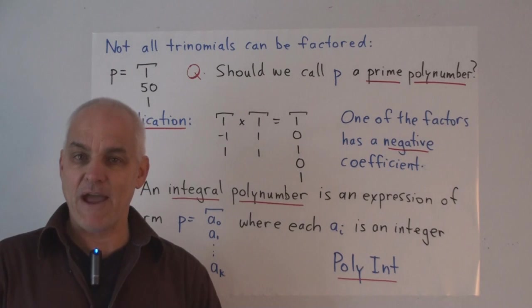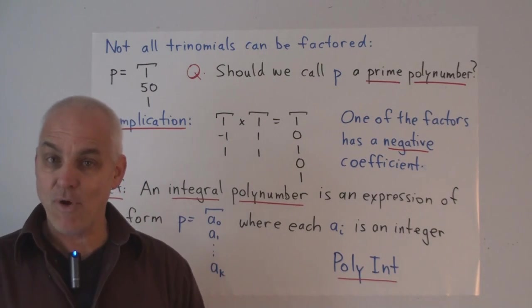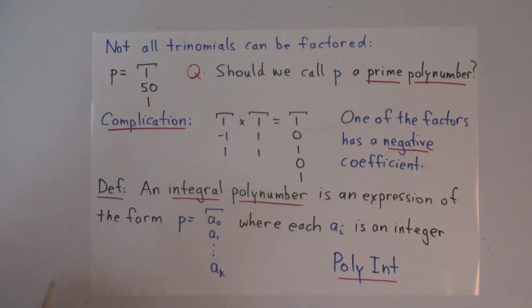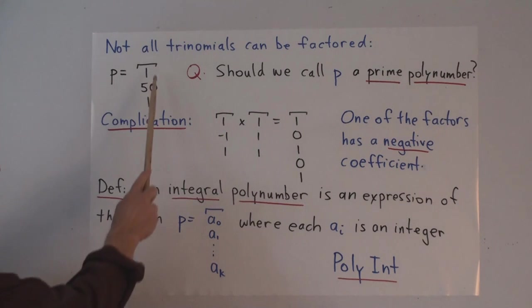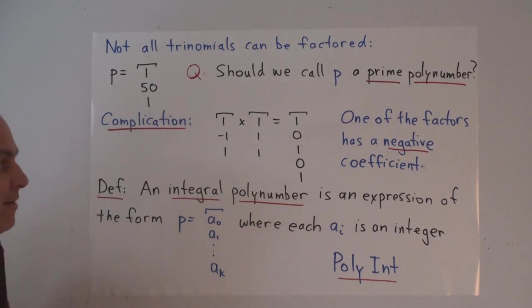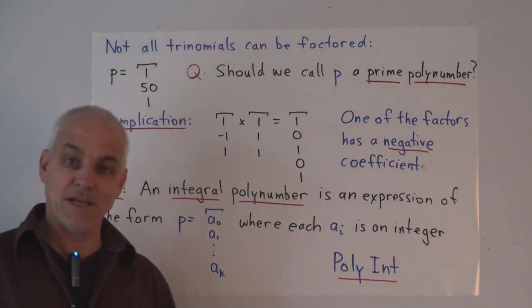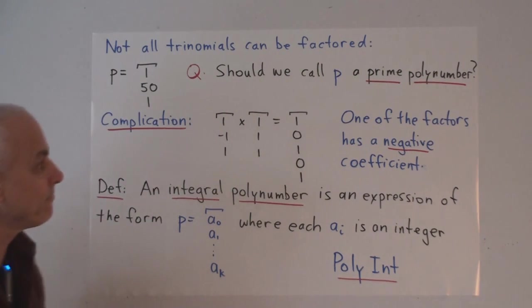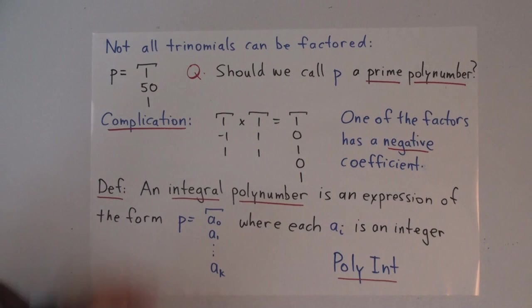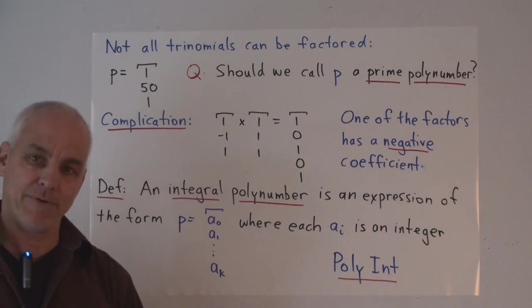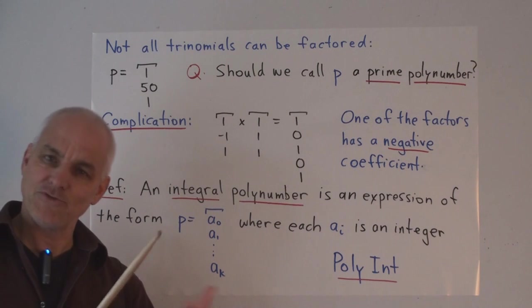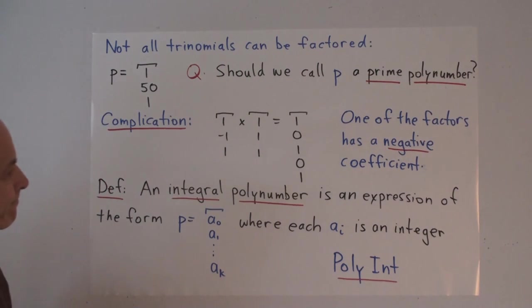Some trinomials cannot be factored. If you just write down a random one, then it is very likely that you cannot be factored. For example, it's not hard to see that the polynumber 1,5,1 cannot be factored into two binomials. So the natural question is, should we call that kind of polynumber a prime polynumber? That certainly strikes us as reasonable.